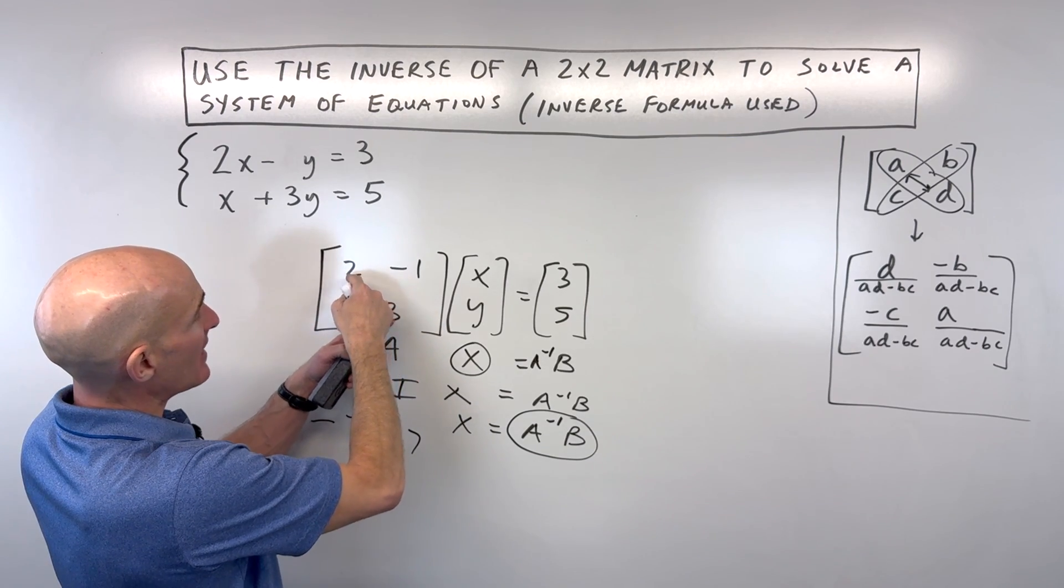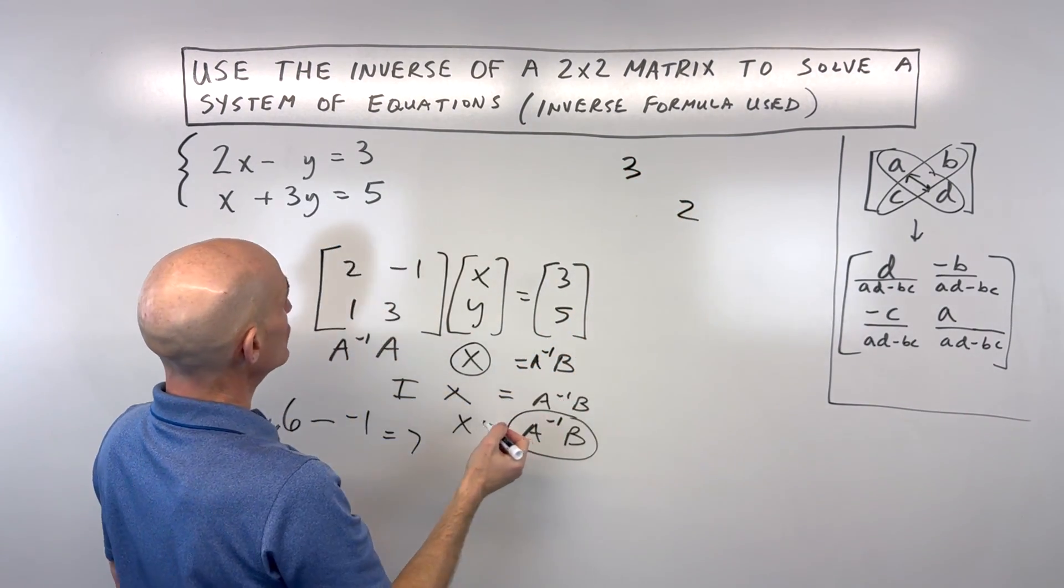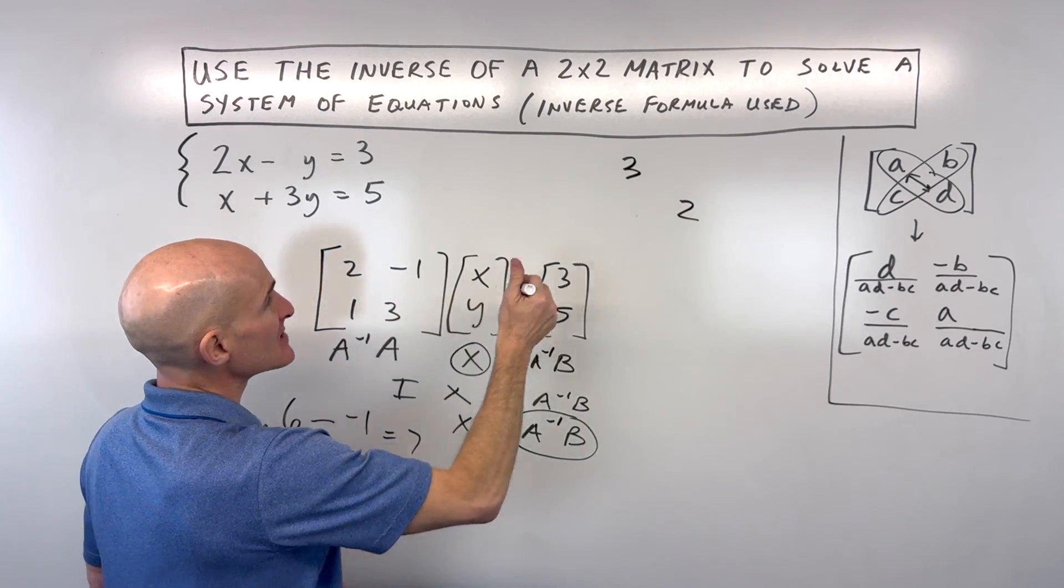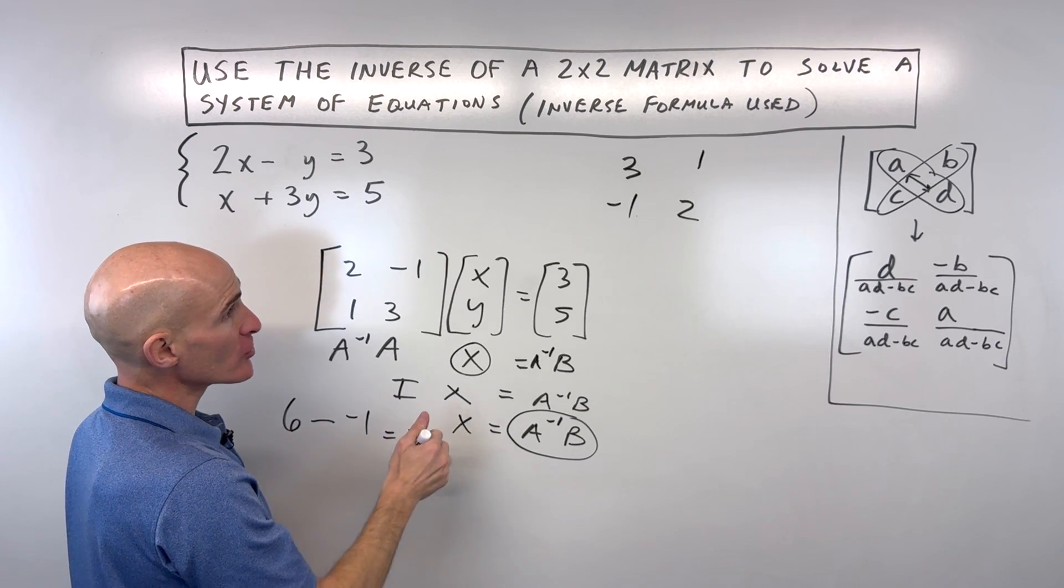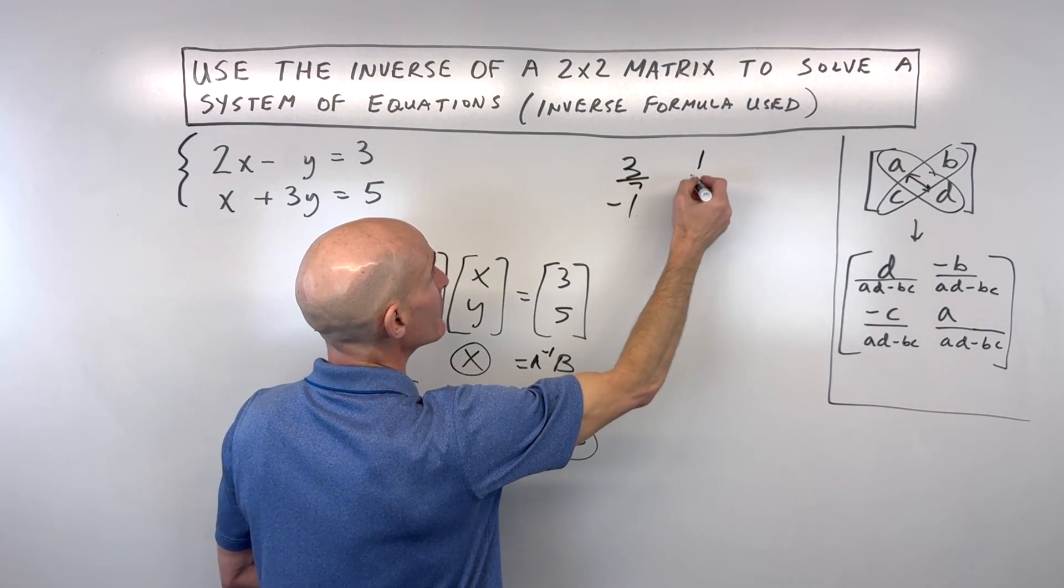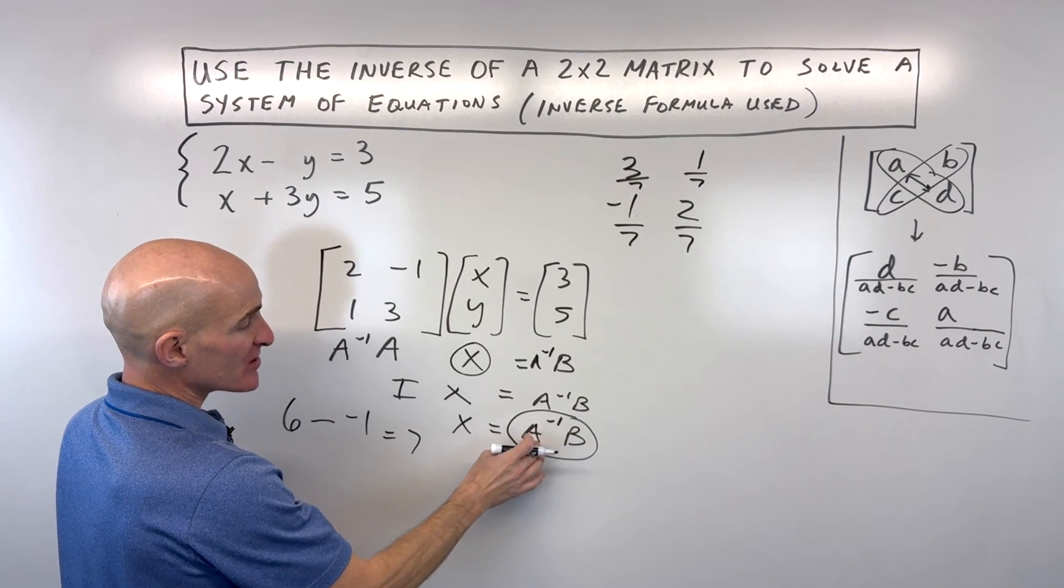Then what I'm going to do is I'm going to switch these on the diagonal. So if I do that, I get 3 and 2, and these ones are going to make the opposite sign, so multiply by negative 1, so that would be 1 and negative 1. And I'm going to divide them all by our determinant, AD minus BC, which is 7. So that's our inverse matrix here, A inverse.